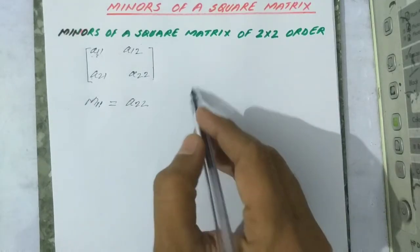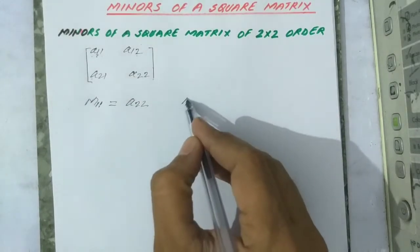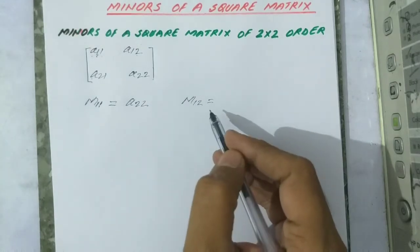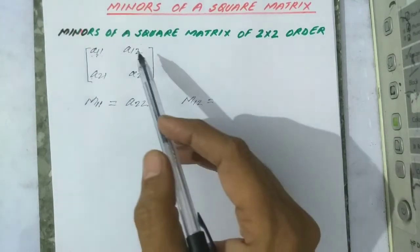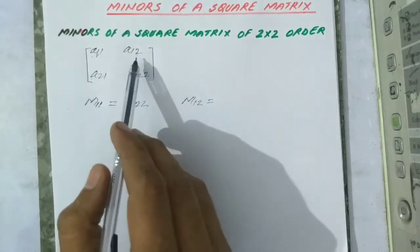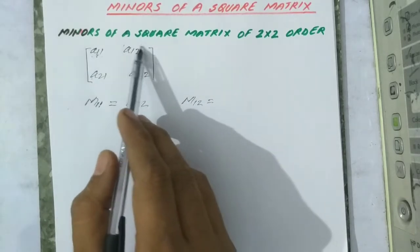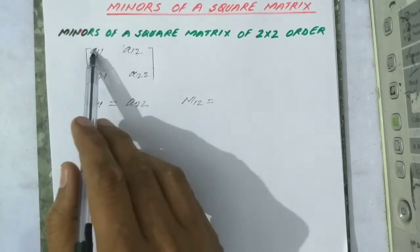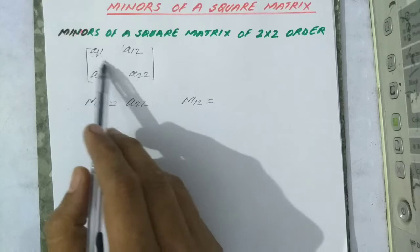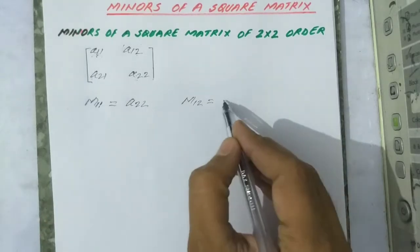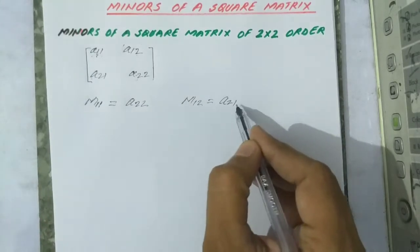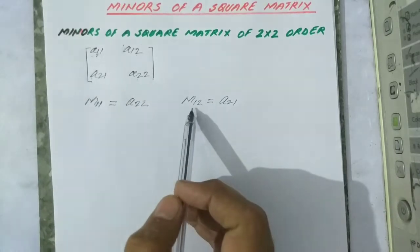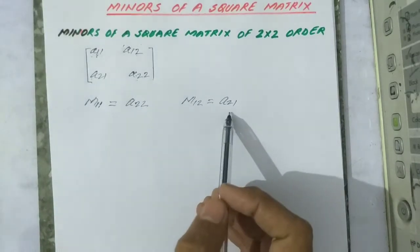In the same way, the minor of a12, denoted by m12, is the element left after vanishing the column and the row to which this element belongs. This row and this column are vanished, and what is left is only this element, a21. So, the minor of a12 denoted by m12 is equal to a21.